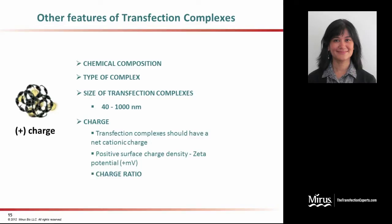Another key parameter in the grand scheme of transfection is the overall charge of the transfection complexes. As mentioned previously, all kinds of transfection complexes — whether lipid or polymer-based — should have a net cationic charge. This needs to manifest in terms of an overall positive surface charge density of the transfection complexes. This surface charge density is calculated in terms of the zeta potential, which typically should be on the slightly positive end.